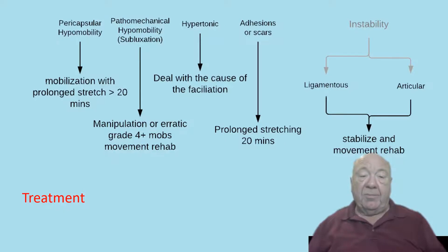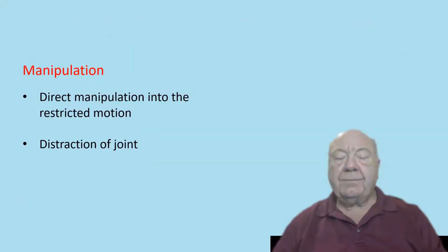So with pericaptor hypomobility and adhesions, you're going to have to mobilize this, and it's going to have to be... okay, so we're going to manipulate the joint. Now there's a couple of different ways you can do this.